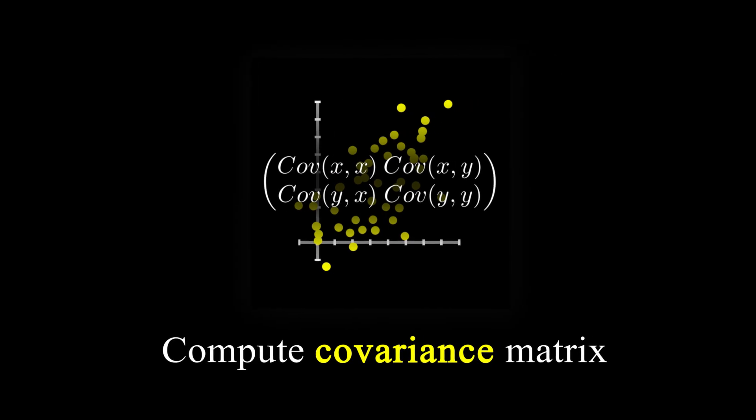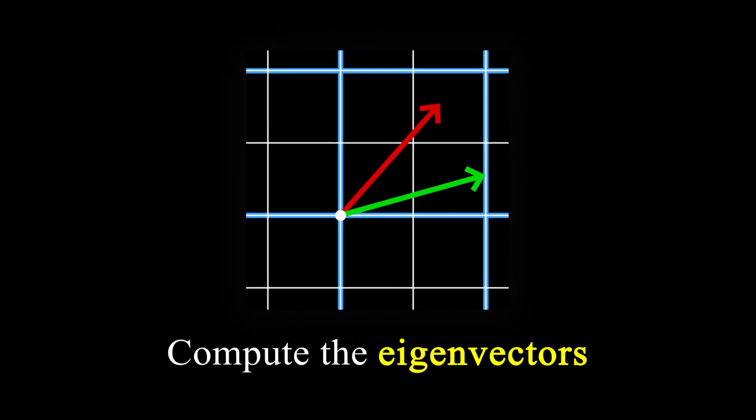Then, by using a linear algebra library, you manually create the covariance matrix, then ask the library to compute the eigenvectors. Then, by keeping the one with the biggest eigenvalue, you get your object's direction.